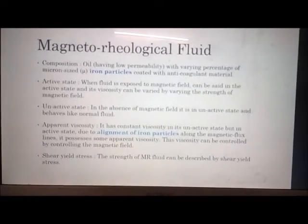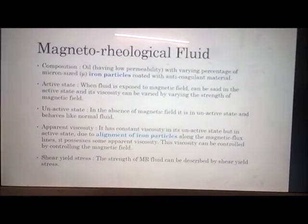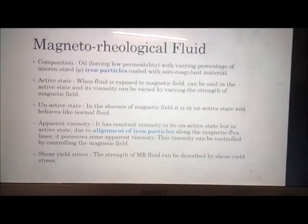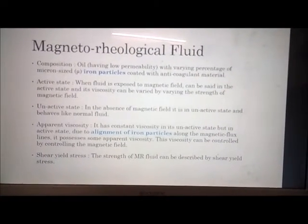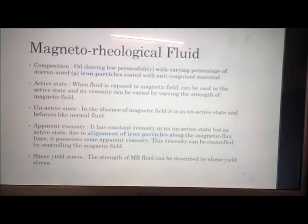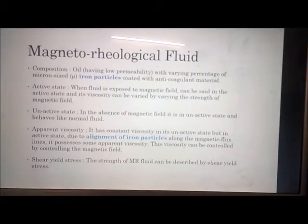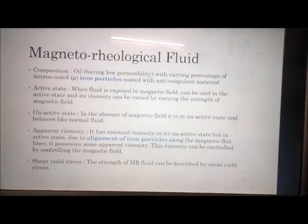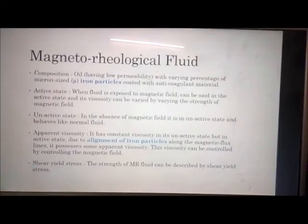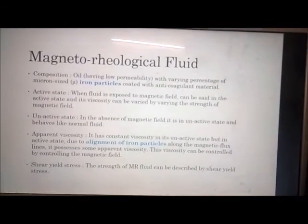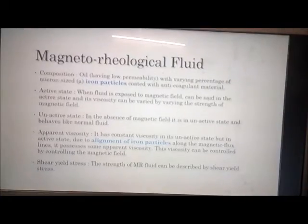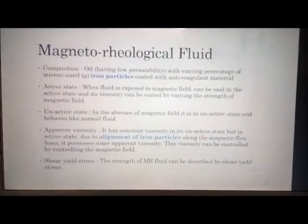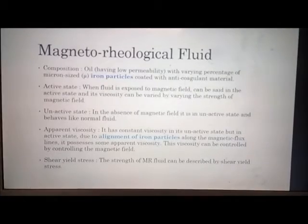In the inactive state, there is no magnetic field and the fluid behaves like a normal fluid — it does not change its properties. The fluid has a constant viscosity in its inactive state, but in the active state, due to alignment of iron particles along the magnetic flux lines, it possesses some apparent viscosity. This viscosity can be controlled by controlling the magnetic field.